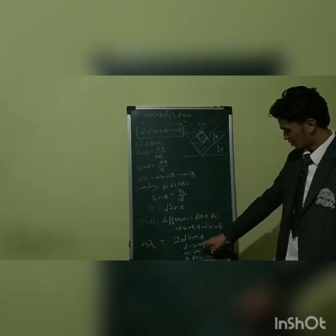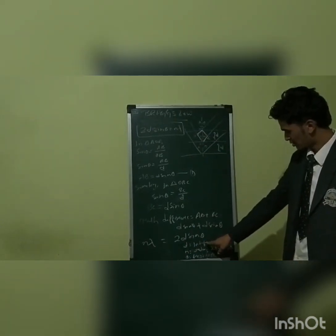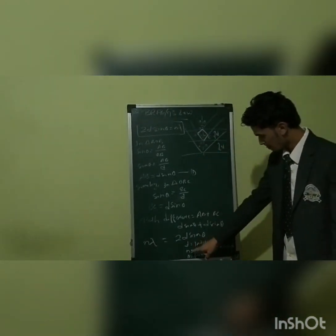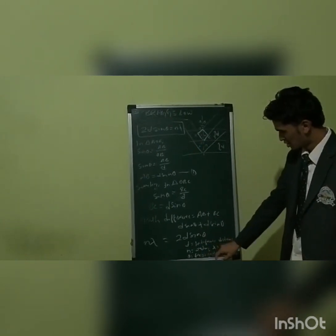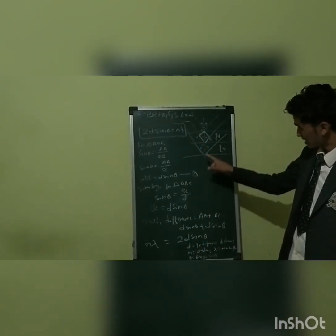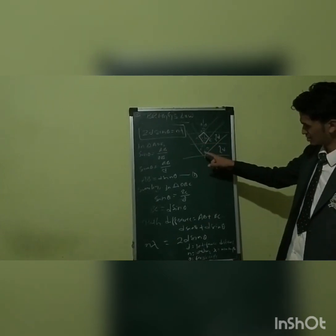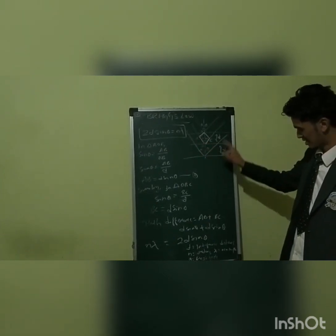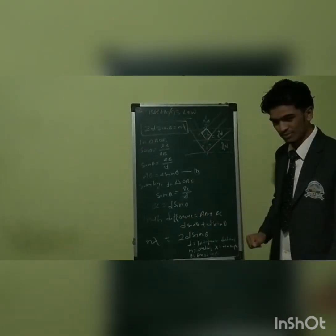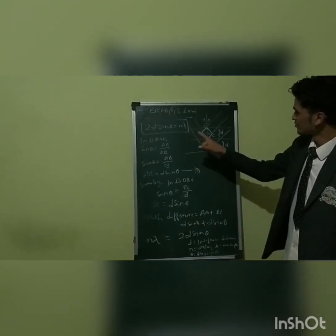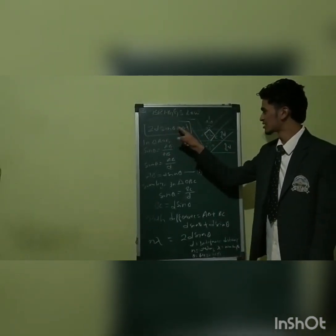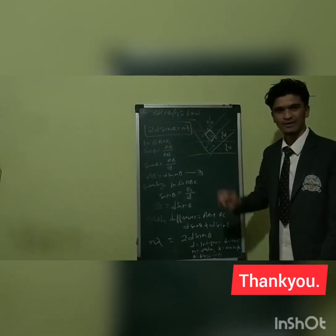In the equation, D is the interplanar distance, n is the order of diffraction, theta is the Bragg's angle, and lambda is the wavelength. So the final equation of Bragg's law is 2D sin theta equals n lambda.